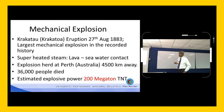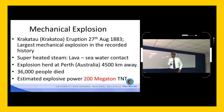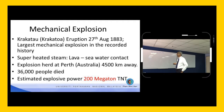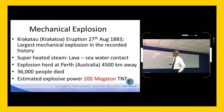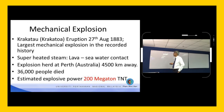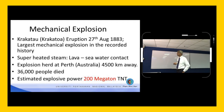The largest Mechanical or Physical Explosion happened nearby here — the Krakatoa eruption on 27th August 1883. It actually started in May, and the largest explosion happened on that date.